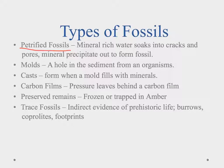The next type is a mold. A mold is where we have a hard part, like a bone or a shell, that falls into sediment. Rock will form, the shell will dissolve away, and you're left with a hole in that rock — that's what a mold is. Sometimes minerals will come through and fill that mold, and then we have a different type of fossil called a cast.